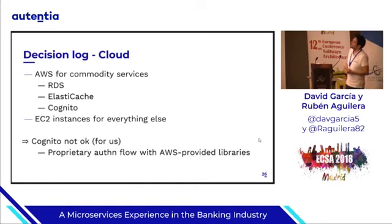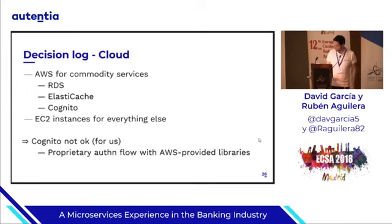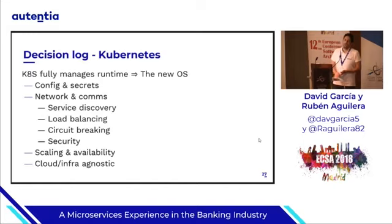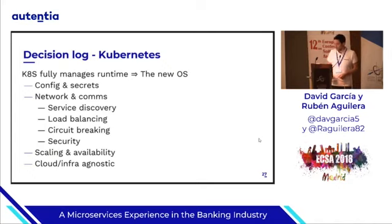Moving to the runtime environment — the cloud. Our top directive was to avoid vendor lock-in by not binding to proprietary APIs. For example, we used Kafka instead of Kinesis. We used Cognito, but it was a mistake. For everything else, we built our own platform on top of EC2 instances. From the beginning it was clear we wanted to use Kubernetes for the runtime, and as we have been evolving the environment, it has become the new operating system — managing all runtime resources, configuration secrets, everything regarding network, scaling, availability, and so on. And it's working very well.